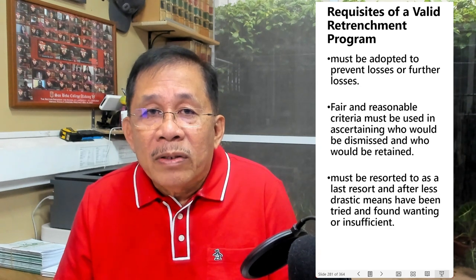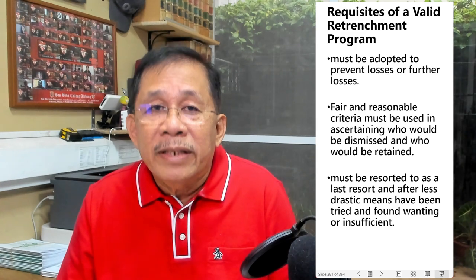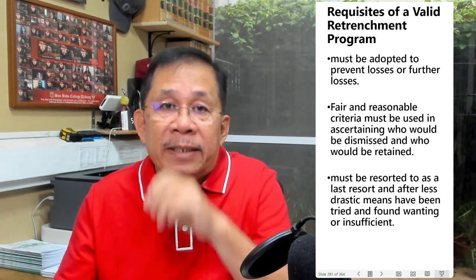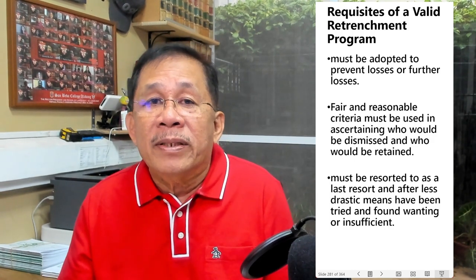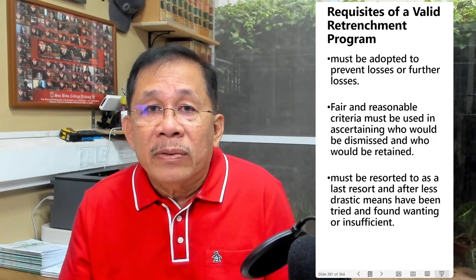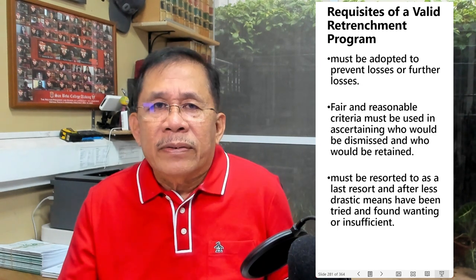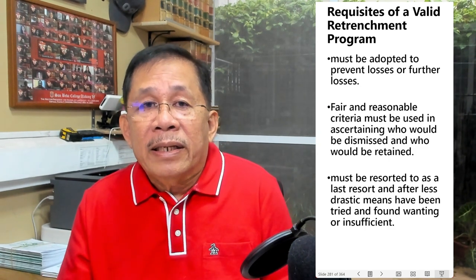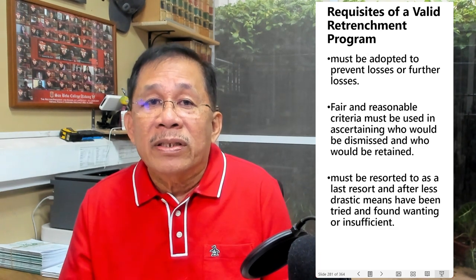The second requirement: fair and reasonable criteria must be used in ascertaining who will be dismissed and who will be retained. The criteria could be efficiency, seniority, physical fitness, financial hardship for workers, or status of employment. Usually, the principle of last-in, first-out is applied. The third requirement: retrenchment must be resorted to as a last resort after less drastic means have been tried and found wanting or insufficient.